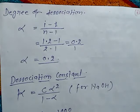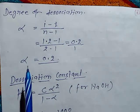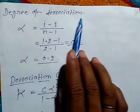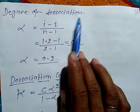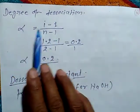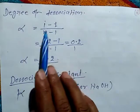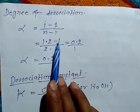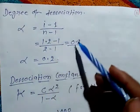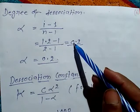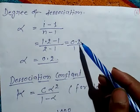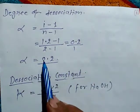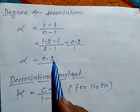Now calculating the degree of dissociation: α = (i − 1) / (n − 1) = (1.2 − 1) / (2 − 1) = 0.2 / 1 = 0.2. So α = 0.2.